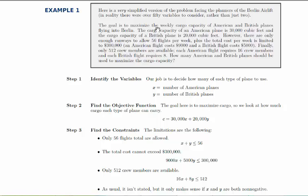Our goal is to maximize the weekly cargo capacity of American and British planes flying into Berlin. We're told that the cargo capacity of an American plane is 30,000 cubic feet and the cargo capacity of a British plane is 20,000 cubic feet. However, there are only enough runways to allow 56 flights per week, so we're starting to think in terms of constraints, plus the total cost per week is limited to 300,000 and we're told what each flight costs. Finally, only 512 crew members are available. Each American flight requires 16 crew members and each British flight requires 8 crew members. How many American and British planes should be used in order to maximize the cargo capacity?